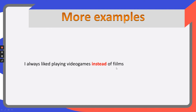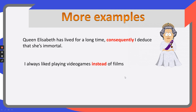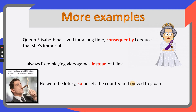More examples with different words. 'Instead' — again, it's an opposition. 'I always liked playing video games instead of films.' Instead gives an idea of opposition — I prefer something instead of something else. For instance, I'm Italian. I prefer eating lasagna instead of pizza. 'Queen Elizabeth has lived for a long time. Consequently, I deduce that she's immortal.' 'He won the lottery, so he left the country and moved to Japan.' Imagine a friend wins the lottery — do you think they're going to stay in Brazil? He won the lottery, that has a consequence: he left the country and moved to Japan. 'So' is a connector of consequence.